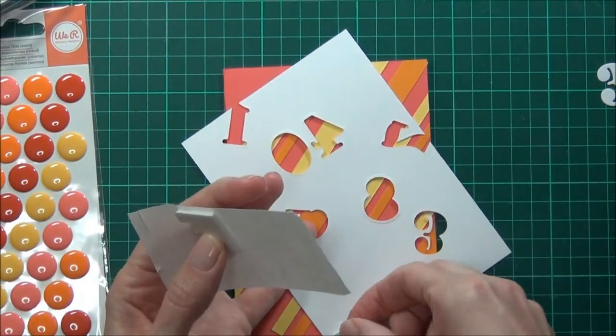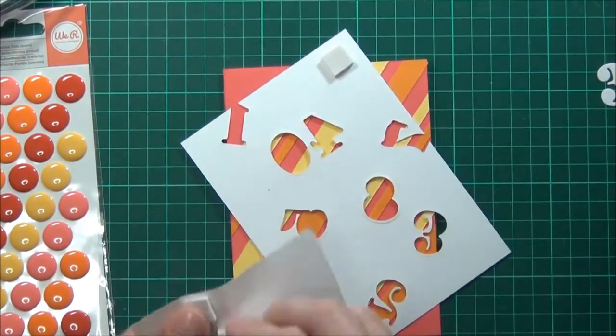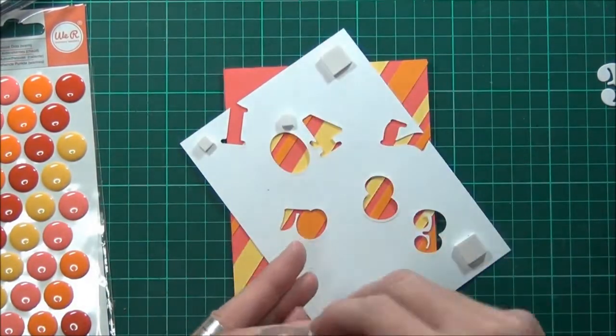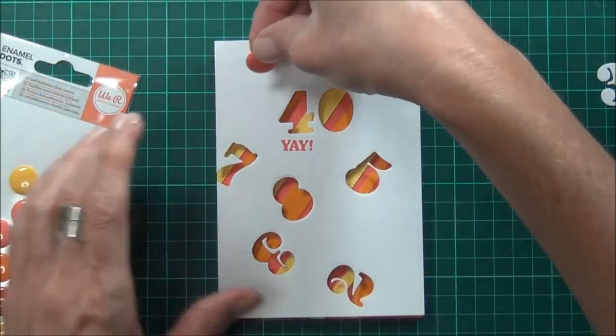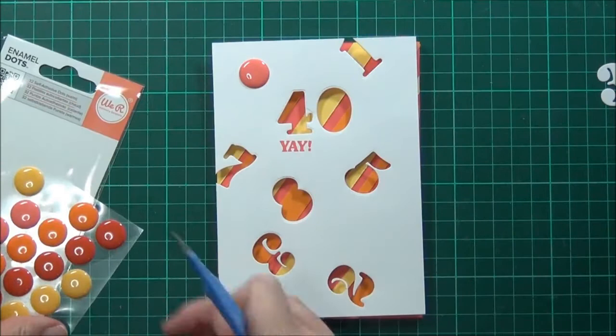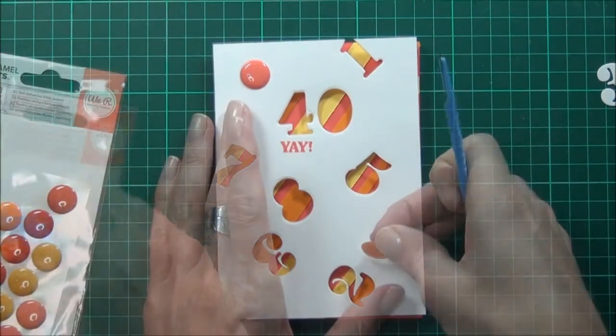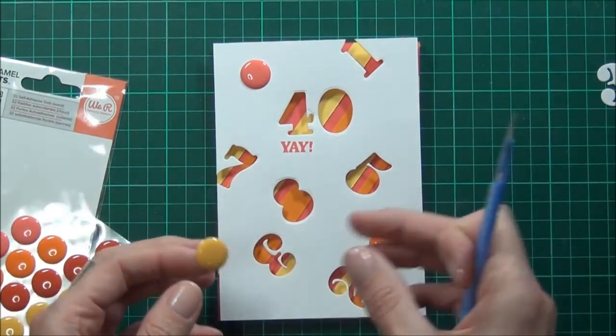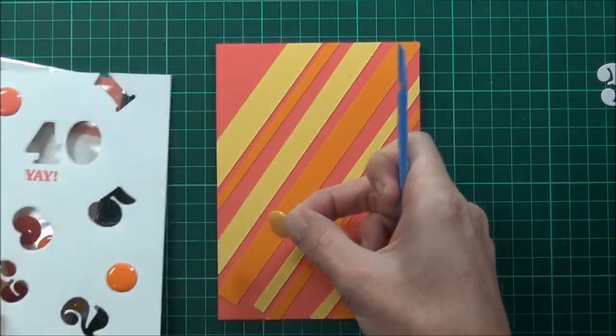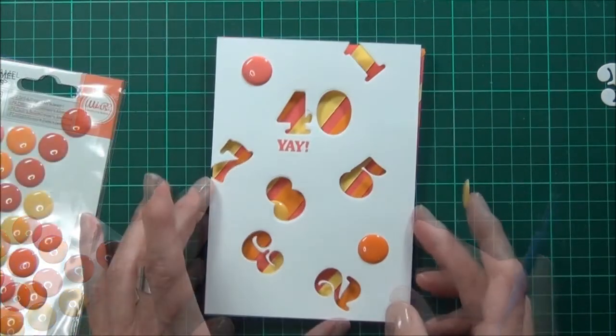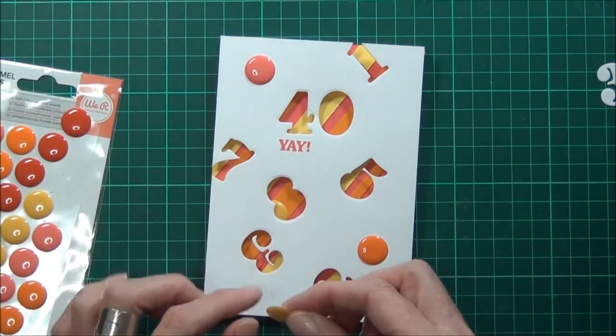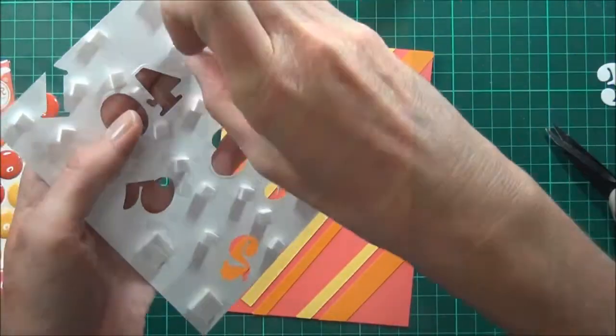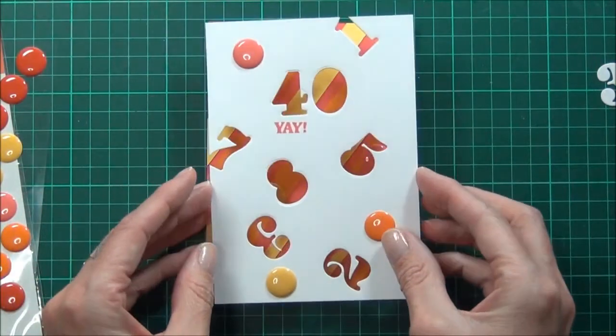And then I have some This to That foam squares and I'll put lots of these on the back, especially around the die cut areas. I'll just pop this down on the front.